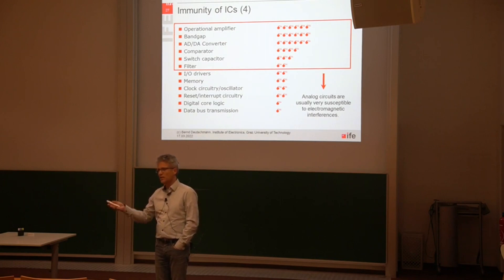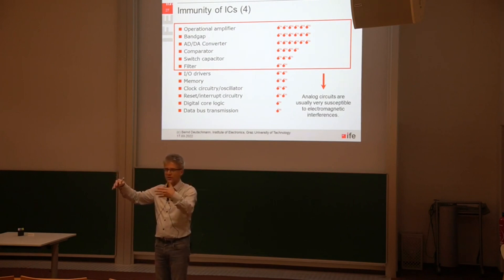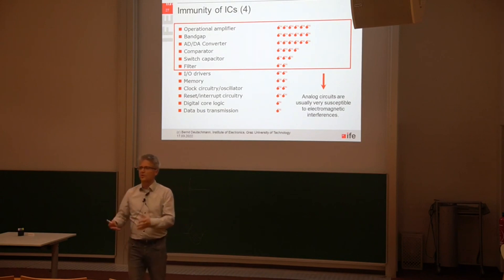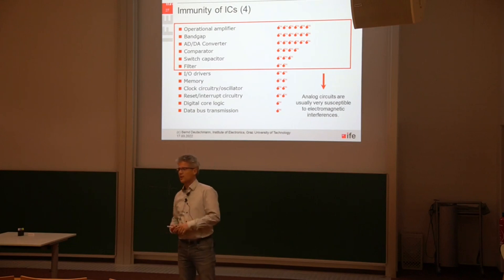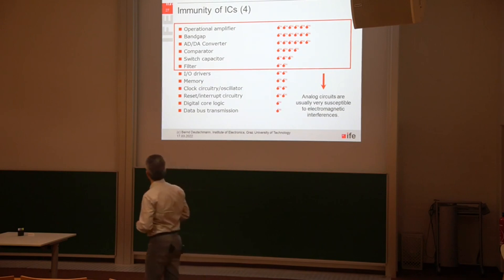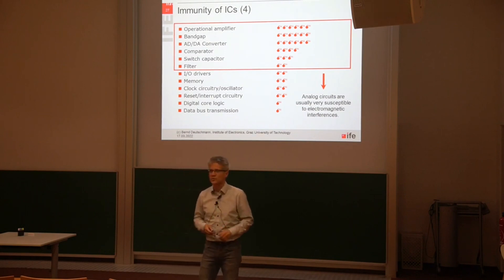Very often you generate a so-called EMI-induced DC offset. There is a DC signal additionally caused by the RF energy when RF energy hits the operational amplifier's inputs or power supplies. This is a very big problem, and there are quite a lot of papers on how to design operational amplifiers, band gaps, and increasingly analog-to-digital and digital-to-analog converters correctly. There is still quite a lot of work to do in order to make proper designs, find design guidelines, and avoid EMC problems on the chip level.